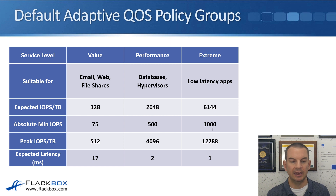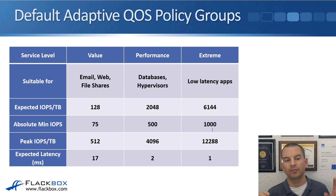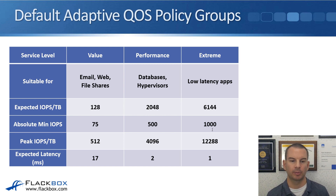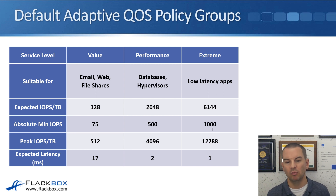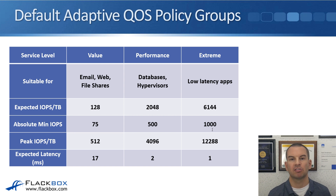Performance has higher values and gives better performance, suitable for databases and hypervisors like VMware. Extreme is the best option, suitable for workloads that require the lowest latency. The expected latency shown for each policy gives you an idea of what latency to expect if that adaptive QoS policy is applied.